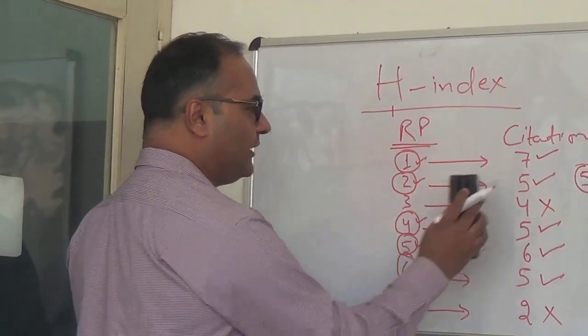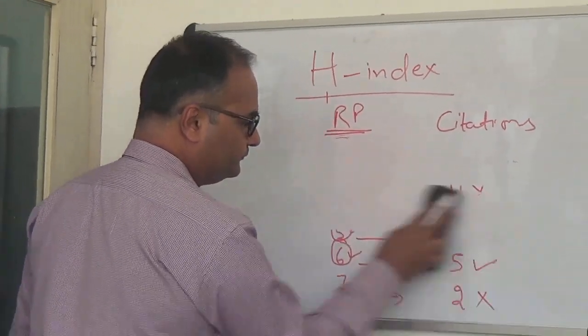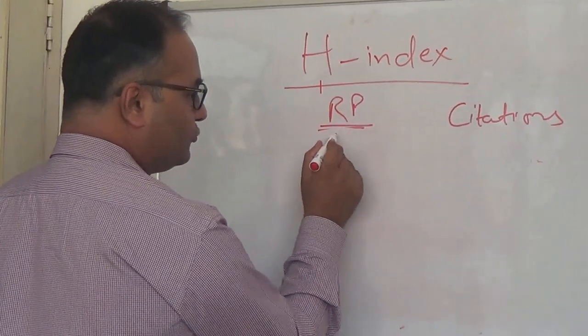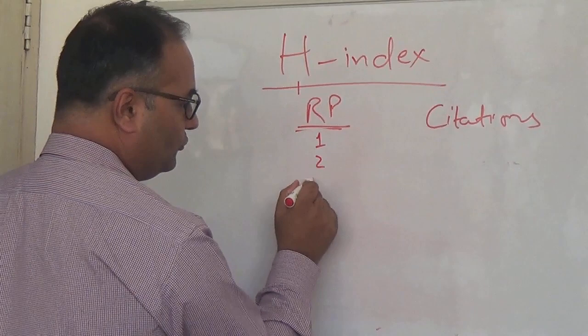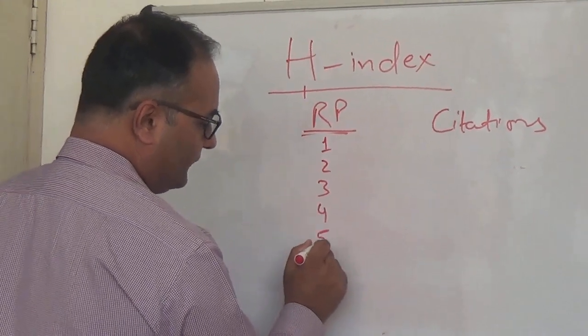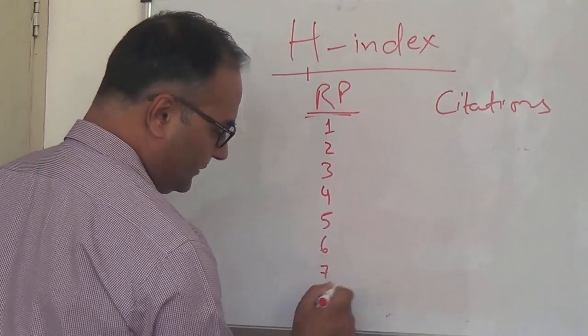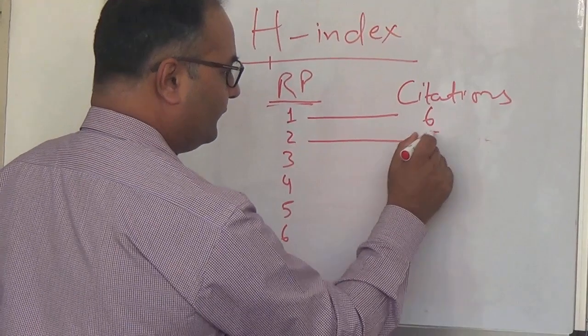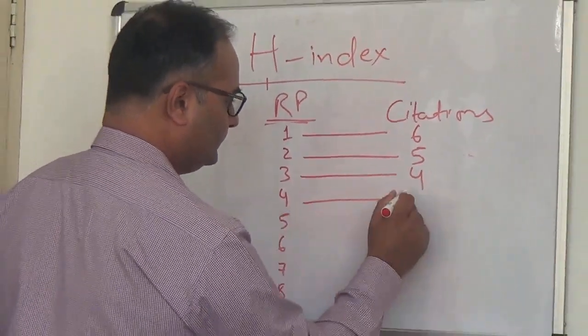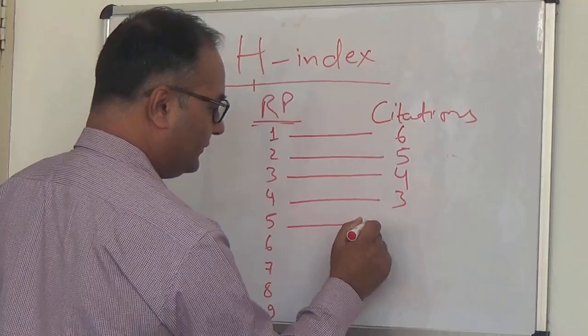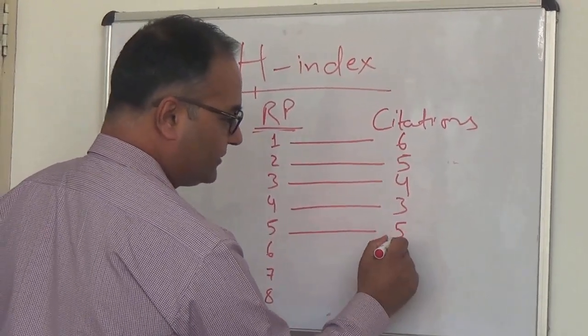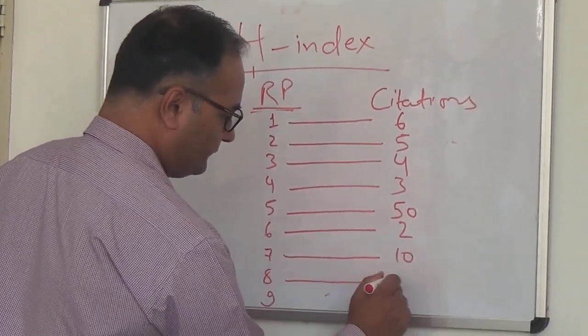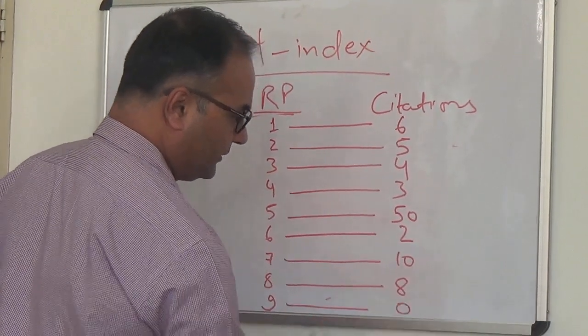Let me take another example. I write count of research papers up to 9: 1, 2, 3, 4, 5, 6, 7, 8, and 9. This paper has been cited 6, 5, 4, 3, and incidentally the author was very good in this particular paper which has been cited 50 times. Then 2, 7, 10, 8, and this has not been cited at all.